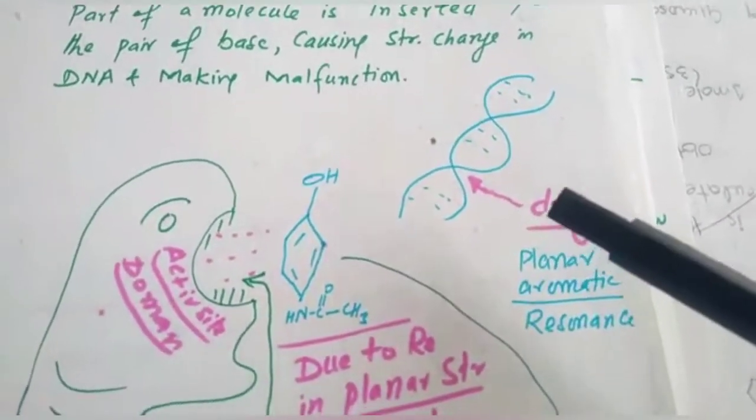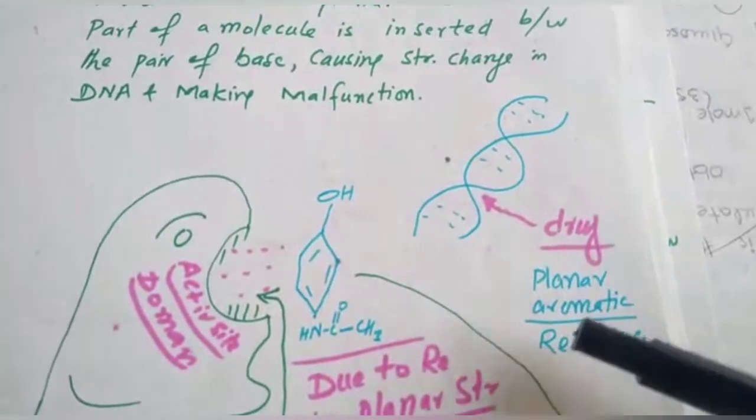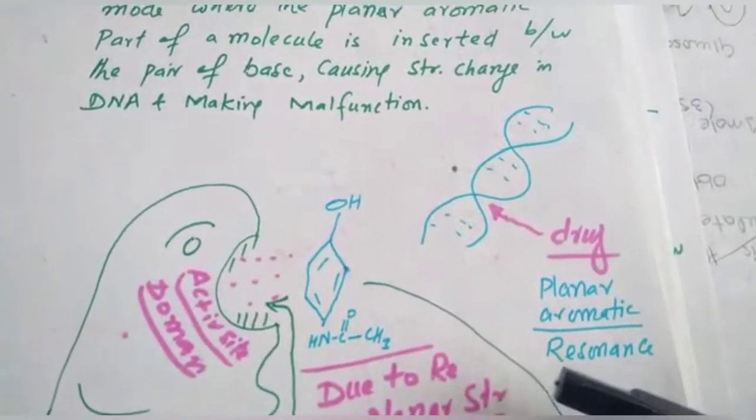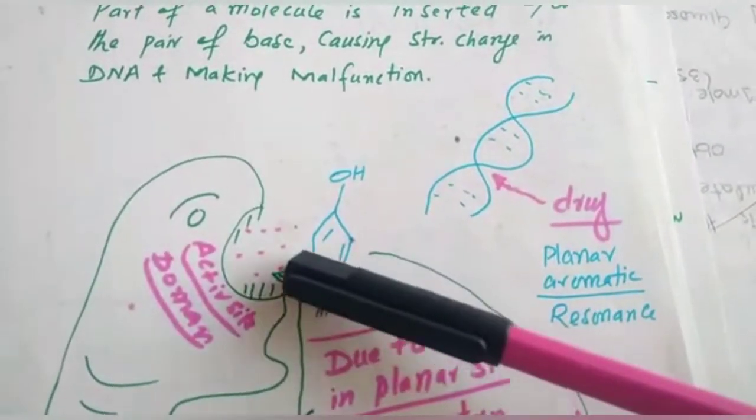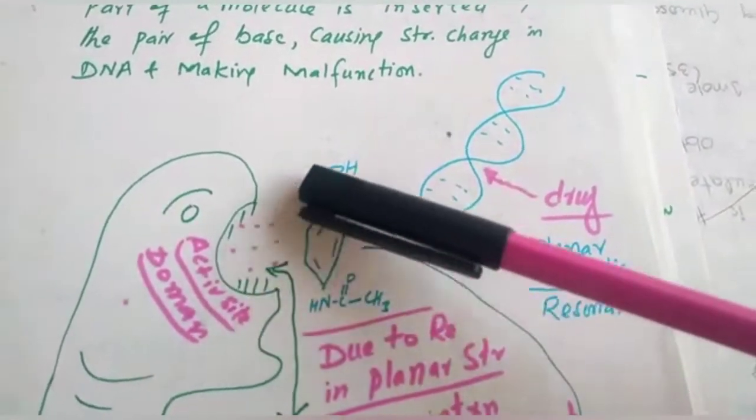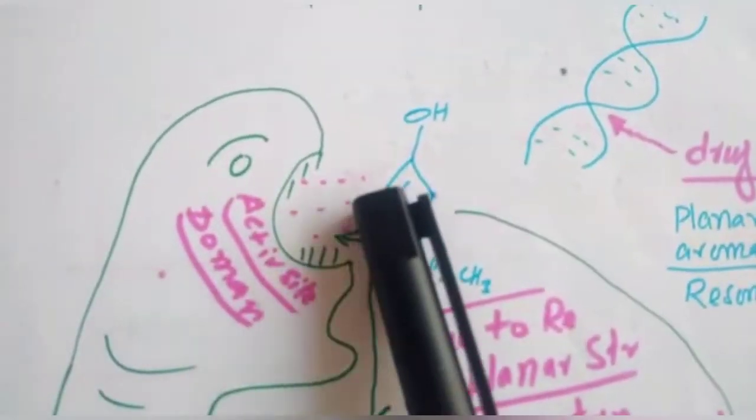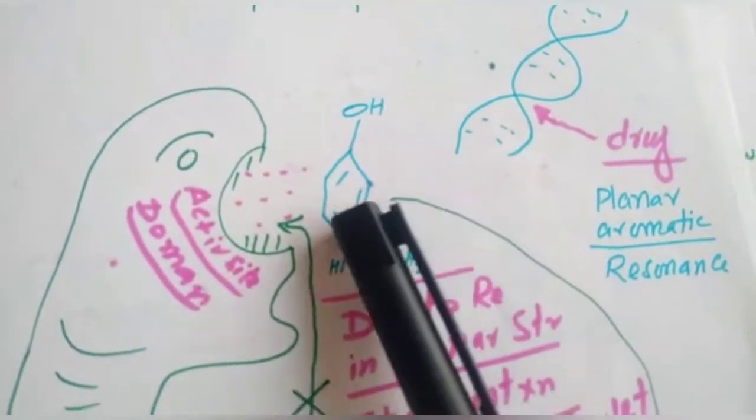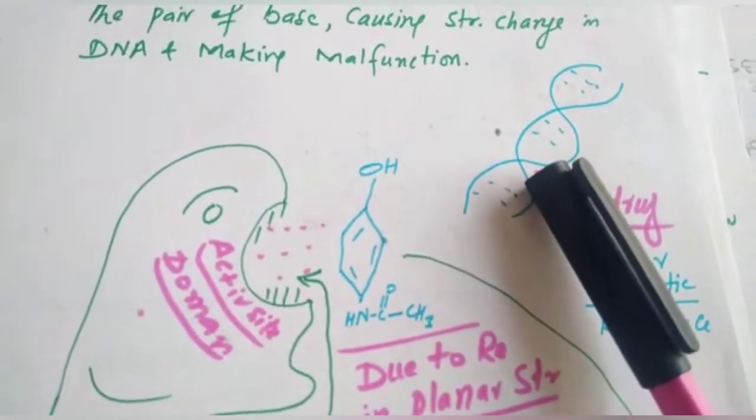This intercalation is possible only with the planar aromatic part of the drug. For example, this is the paracetamol and this part is planar as well as aromatic and there is resonance. So, due to this aromaticity, this planarity and resonance, this part of the molecule can easily insert here.